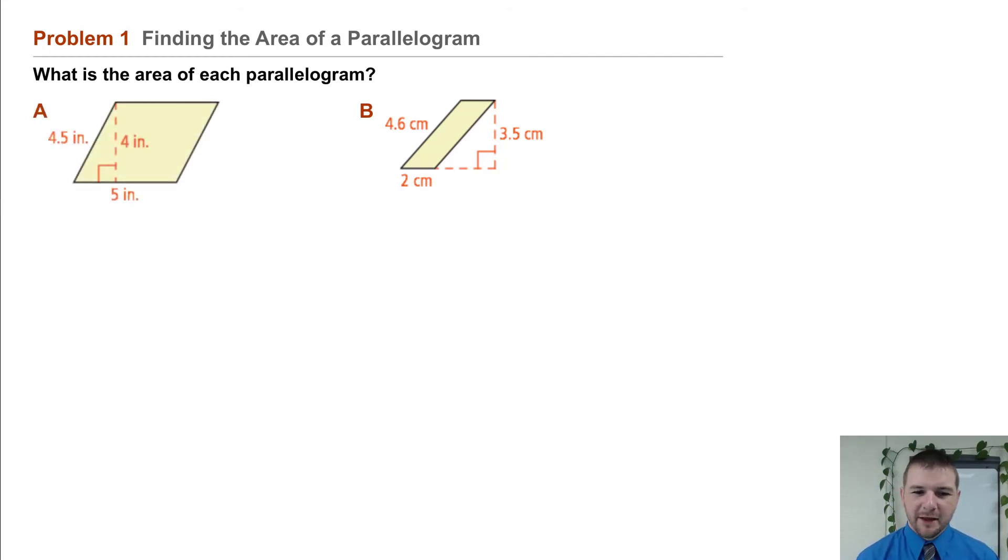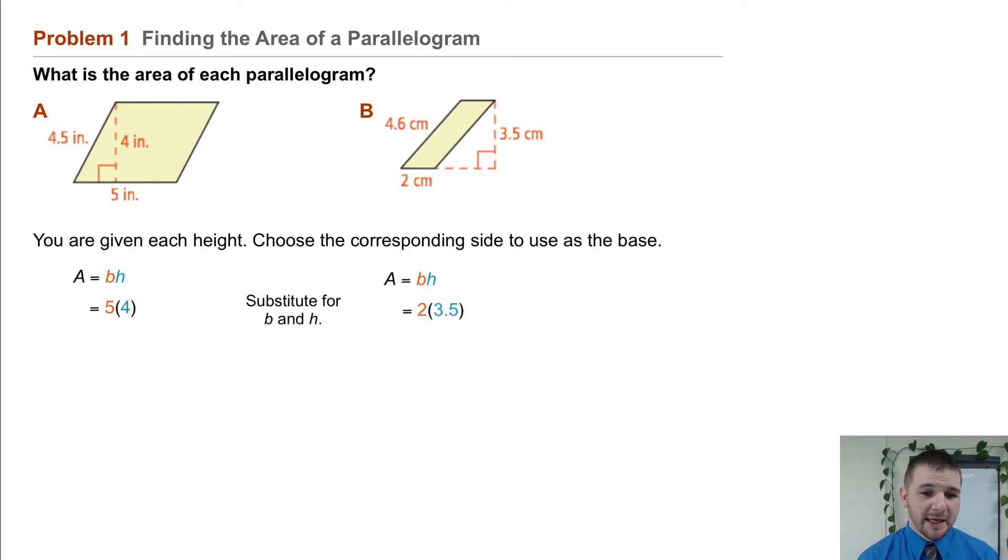We'll work through each of these problems together following the same steps. We're given each height. Choose the corresponding side to use as the base. So in the formula, area equals base times height, we'll substitute our values for B the base and H the height.